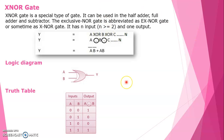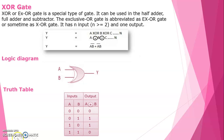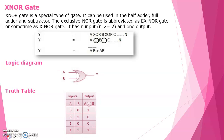Next is the XNOR gate, which is a special type of gate. Compared to the XOR symbol, the XNOR gate has a small circle added. It can be used in a half adder, full adder, and subtractor. The XNOR represents exclusive subtraction. Truth table: 0,0→1; 0,1→0; 1,0→0; 1,1→1.